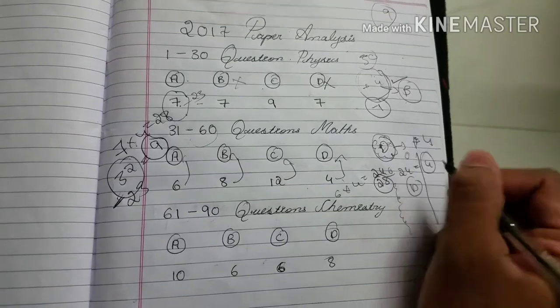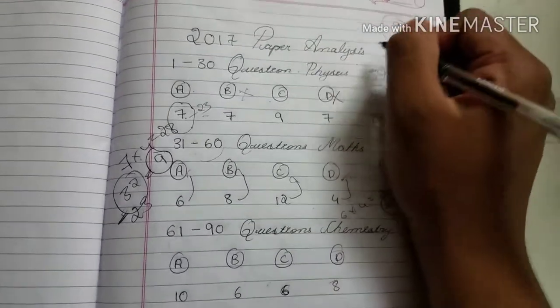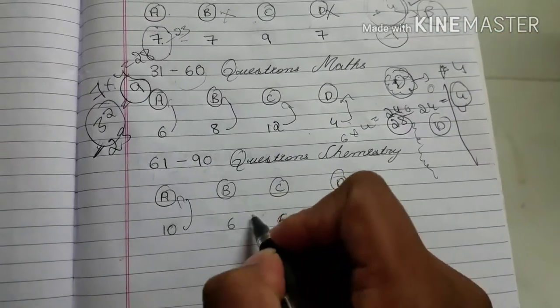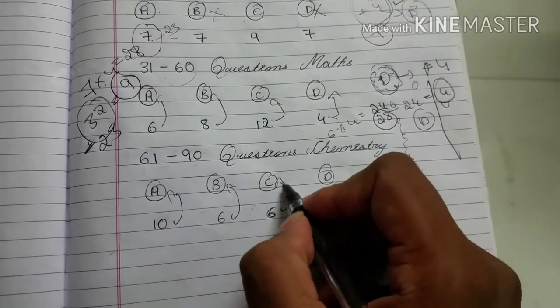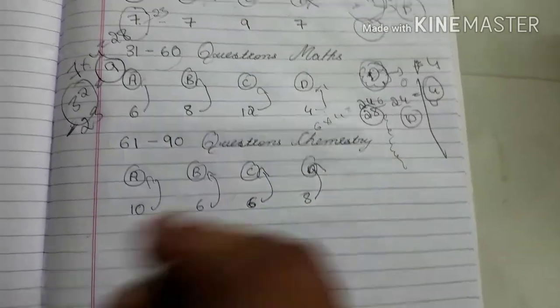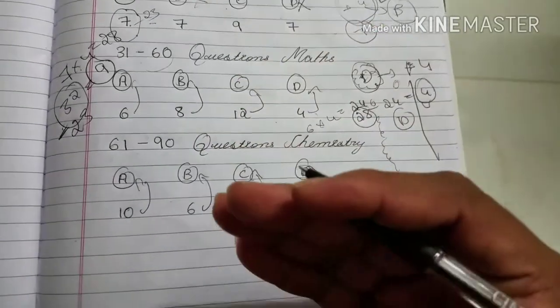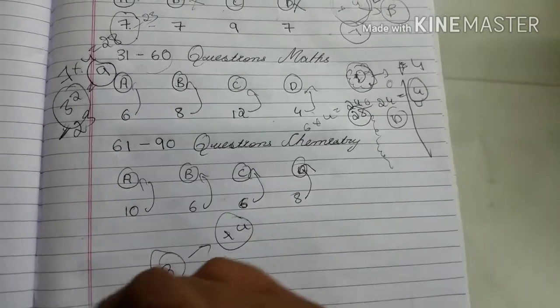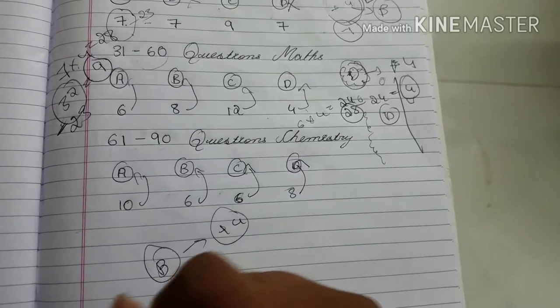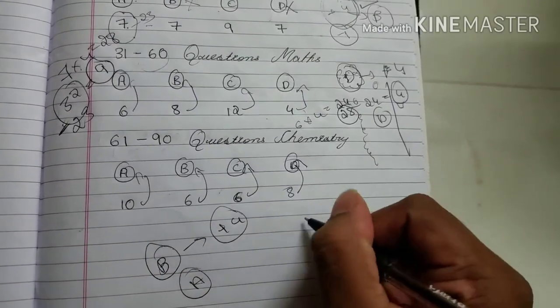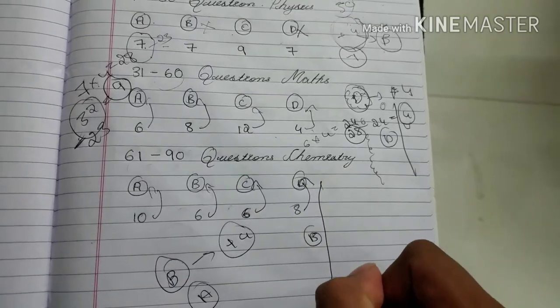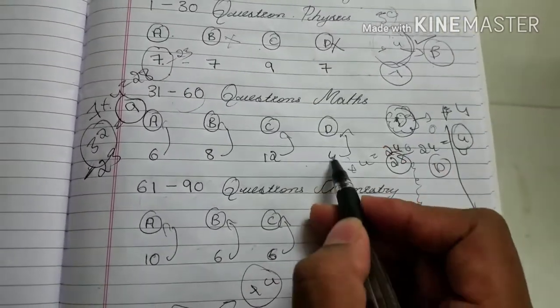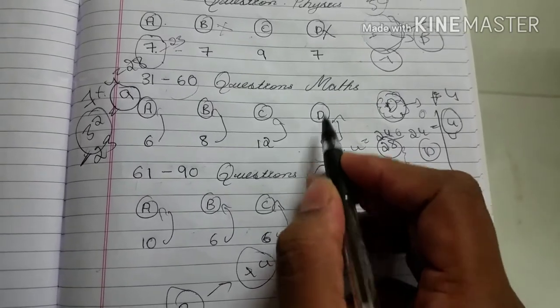Now come to chemistry. There are 10 as A option, 6 as B option, 6 as C option, and 8 as D option. Suppose you apply the same process. If you get B as correct answer, at least one, you'll get plus 4. Now choose A option. You choose A option, leaving this B option. Select one column, you can choose A, B, or C, but don't choose D because in maths they are given only 4 options as D.